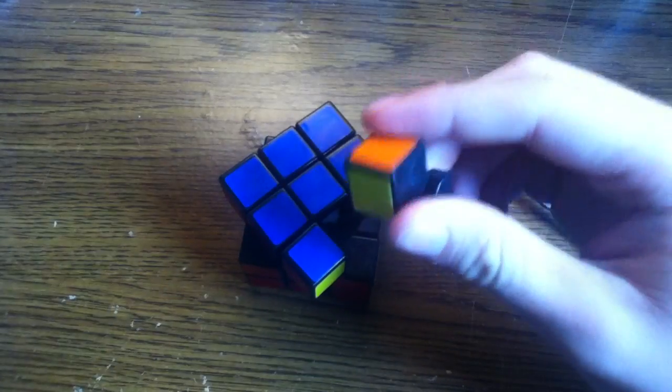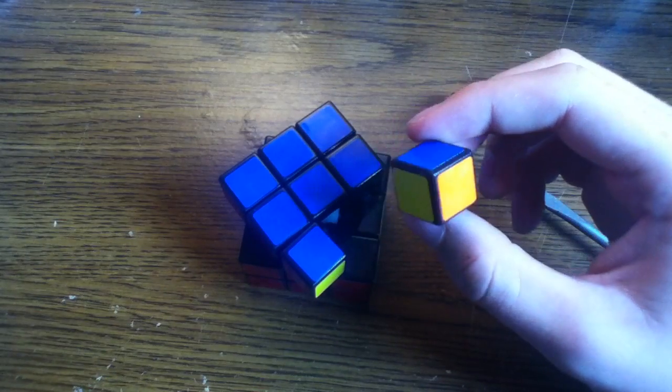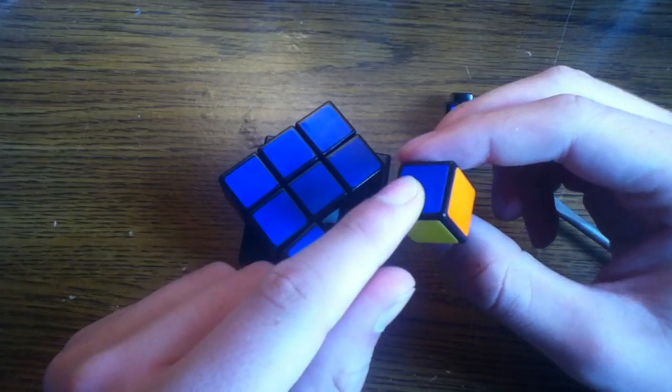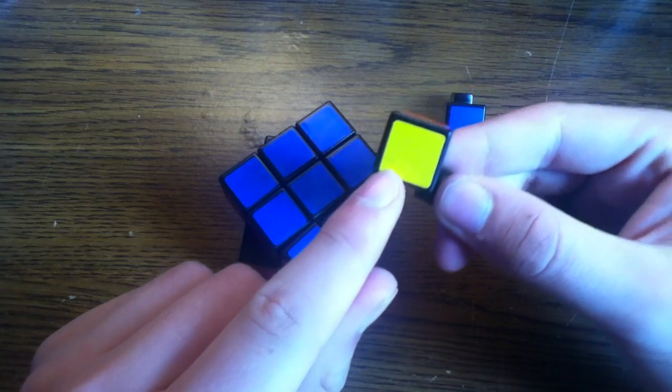This is a corner piece. Corner pieces go on the corner of the cube. There's eight corner pieces and each corner piece has three colors on it. This one has blue, orange, and yellow.